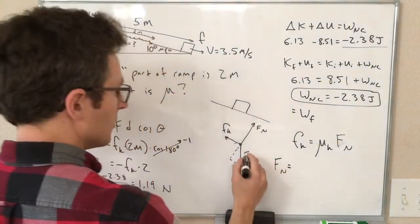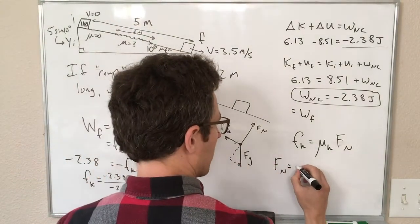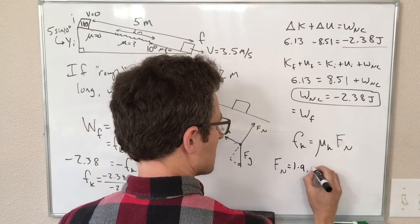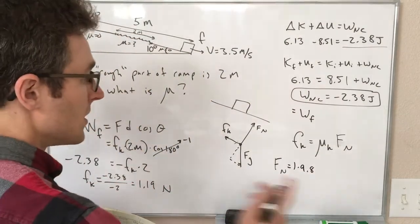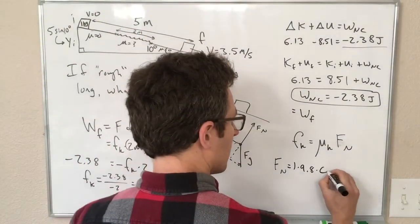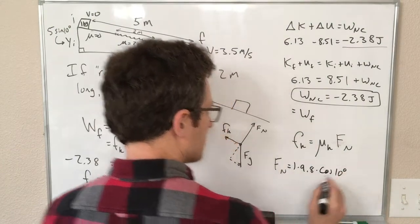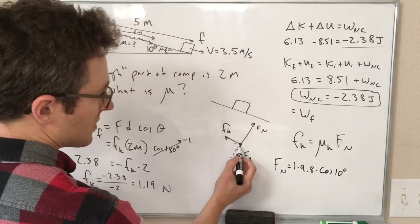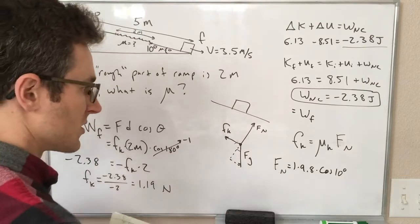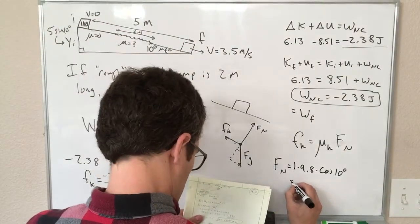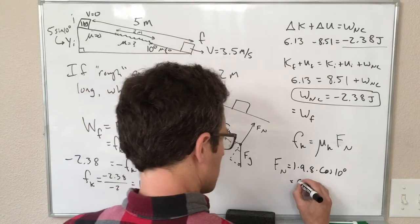So, our normal force is equal to gravity, that is 9.8 newtons, or 1 times 9.8 mg, which is 9.8 newtons, times the cosine of 10 degrees. So this is our 10 degrees, this is the adjacent side, so that's cosine. And that is equal to 9.65 newtons.